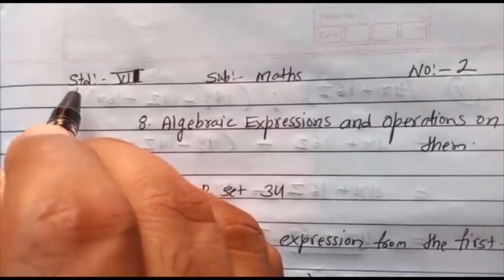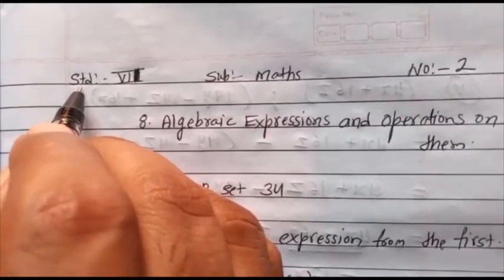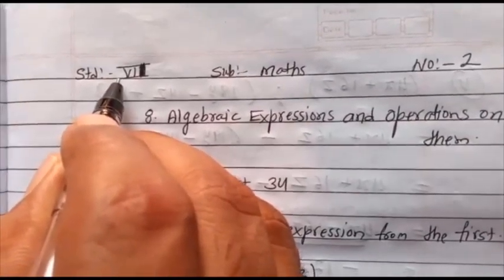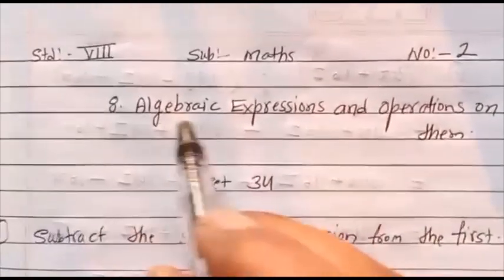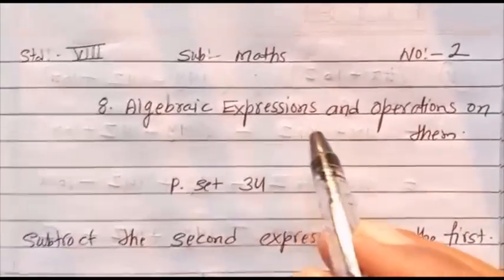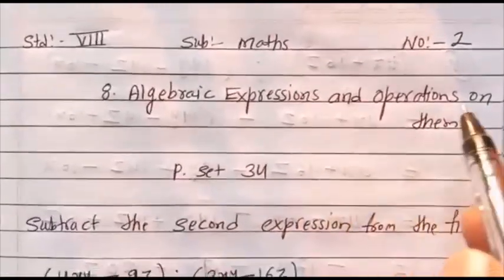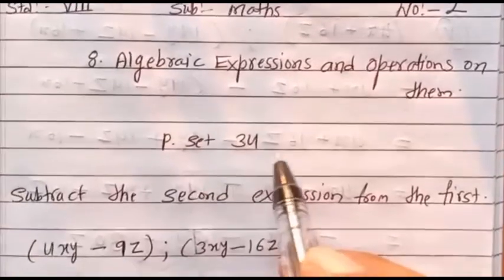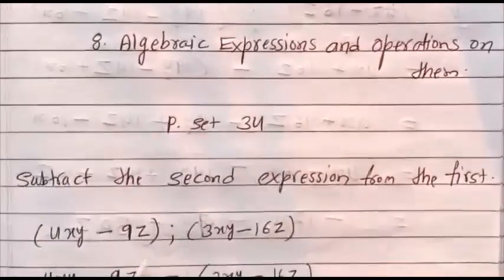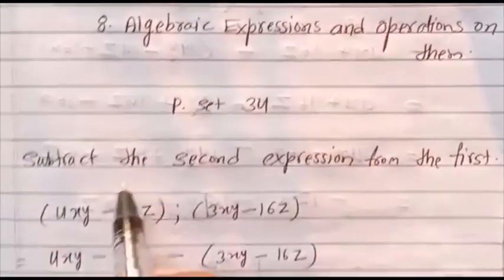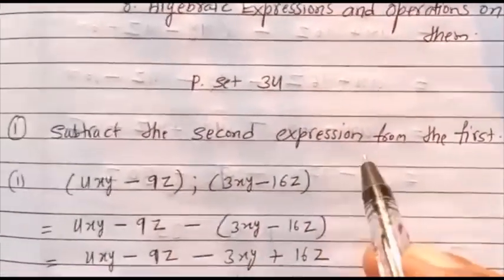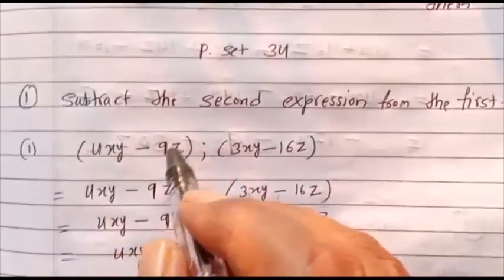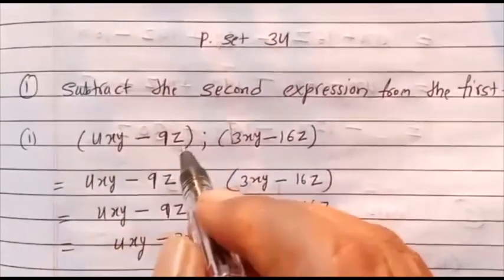Today we are going to learn Standard 7th, subject Maths, Chapter number 8: Algebraic Expressions and the operations on them. Now come to Practice Set number 34: subtract the second expression from the first. 4xy minus 9z is the first expression.